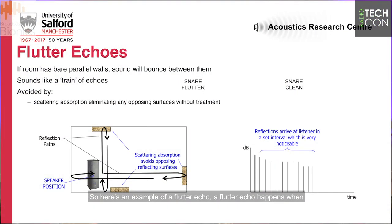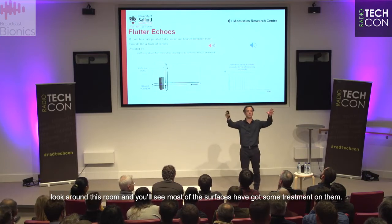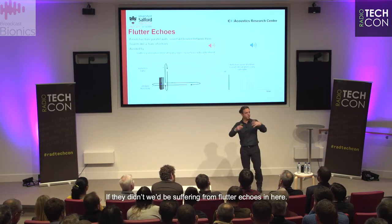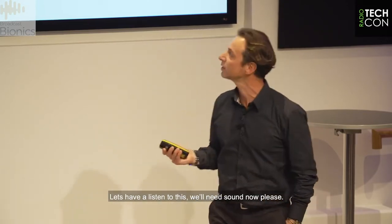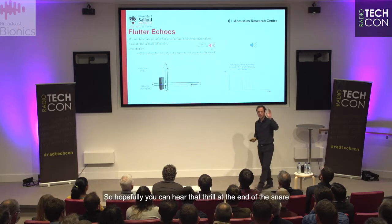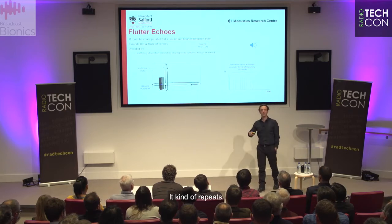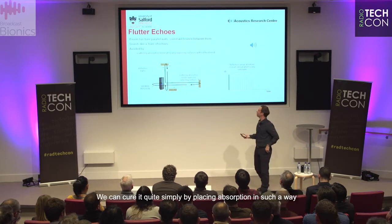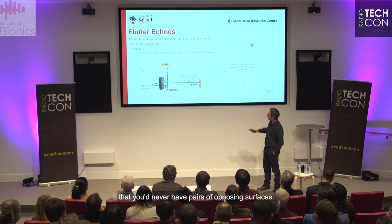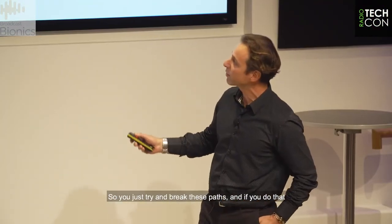Here's an example of a flutter echo. It happens when you have pairs of parallel bare walls with no treatment. Hopefully you can hear that kind of trill at the end of the snare — a train of echoes appearing in the impulse response. We can cure it quite simply by placing absorption so that you never have pairs of opposing surfaces. You don't want to put too much absorption because that deadens the room — you just try and break these echo paths. If you do that, you recover a nice sound.